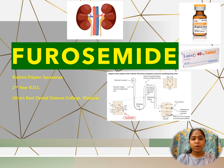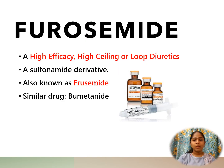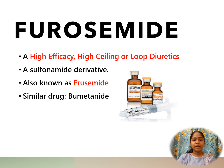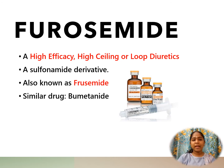Hello and welcome to today's topic: furosemide. Furosemide is a high efficiency, high ceiling loop diuretic. Loop diuretics act on the ascending limb of the loop of Henle. Furosemide is a sulfonamide derivative and is the most commonly used loop diuretic. The other equivalent drug is bumetanide.